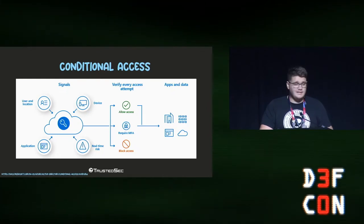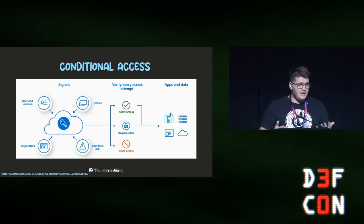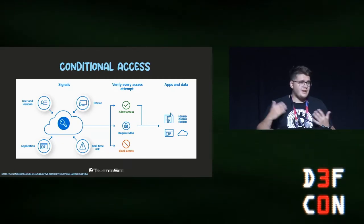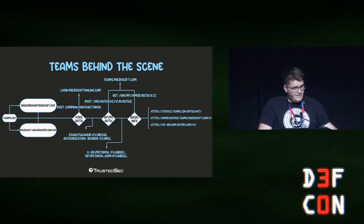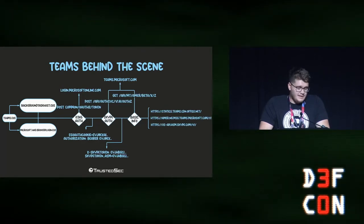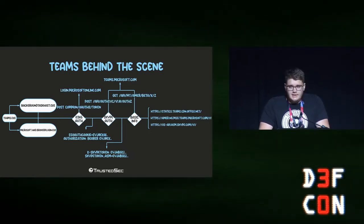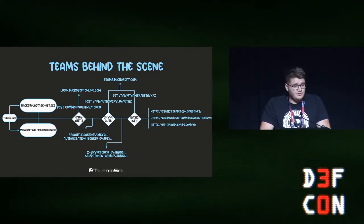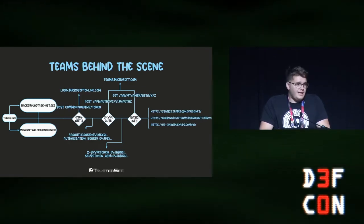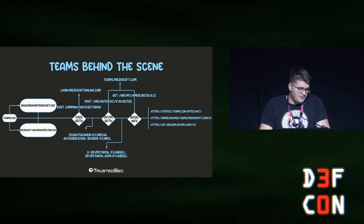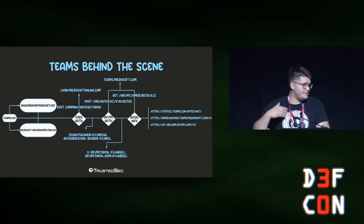I got into Teams and started digging — reversing the API calls it made and looking at the network traffic. There are two other processes you need to capture: Microsoft AAD Broker Plugin and Broker Task Host. If you don't capture traffic from these, access tokens will appear out of thin air and nothing makes sense. But once you capture all three, you get the full picture of how Teams authenticates and what APIs it uses.